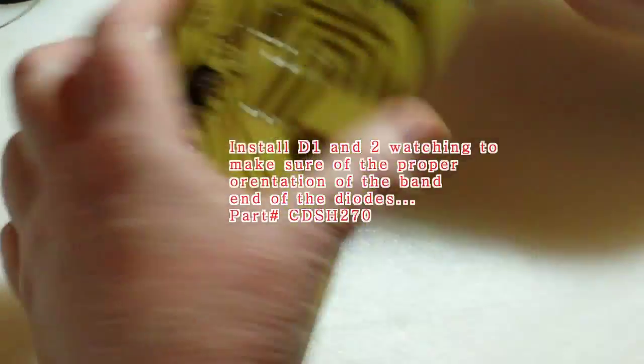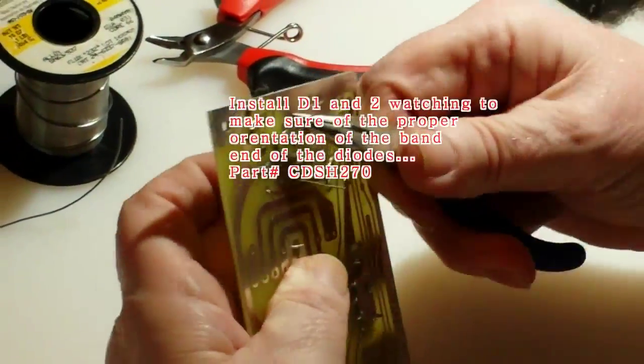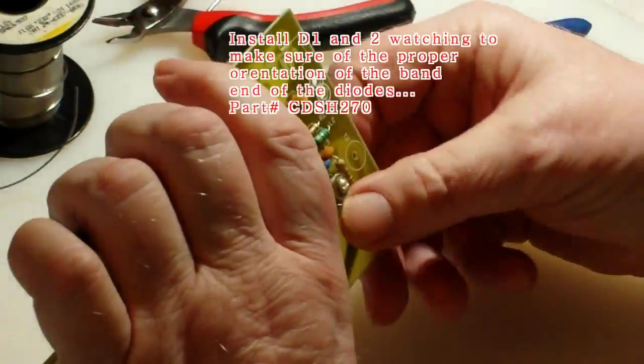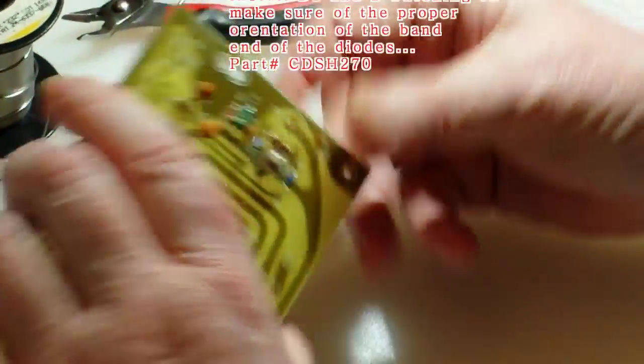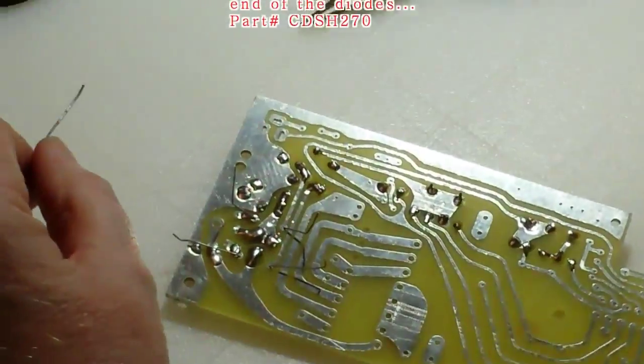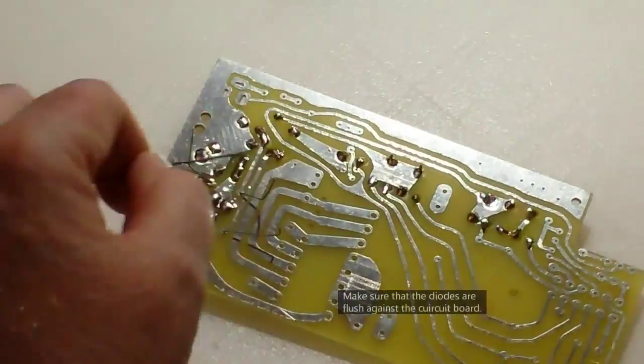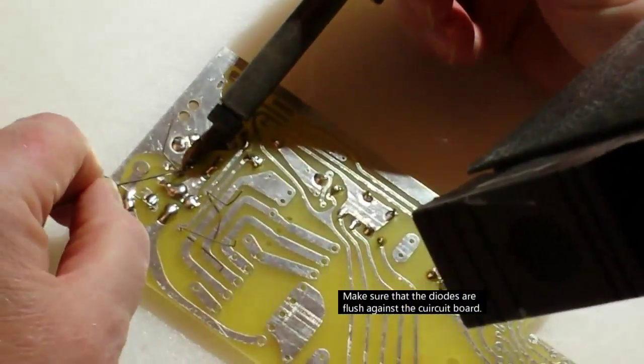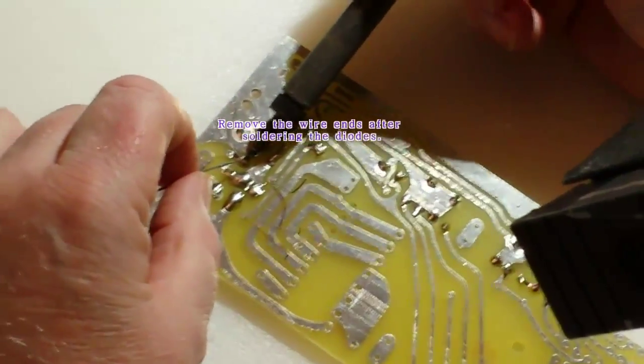Here we're installing D1 and 2. They've got a black band on one end. It has to be oriented in a certain direction. Read the manual. You'll figure out which way it is or take a quick look and pause my video here. You'll see which way it goes.